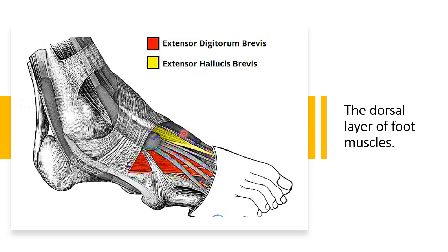The extensor hallucis brevis works on the metatarsophalangeal joint, whereas the extensor hallucis longus works on both the metatarsophalangeal and the interphalangeal joints — so it works on two joints. The nerve supply is the deep fibular nerve.